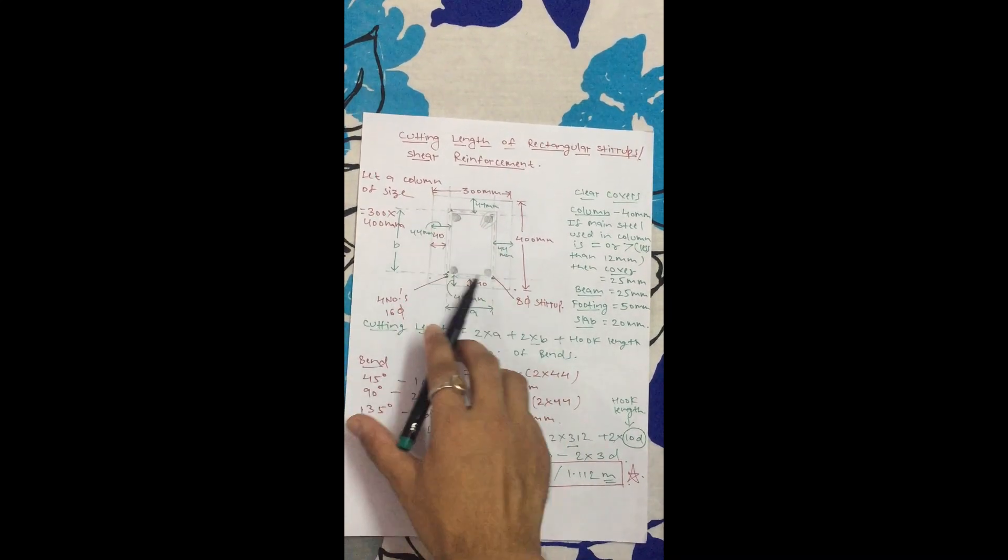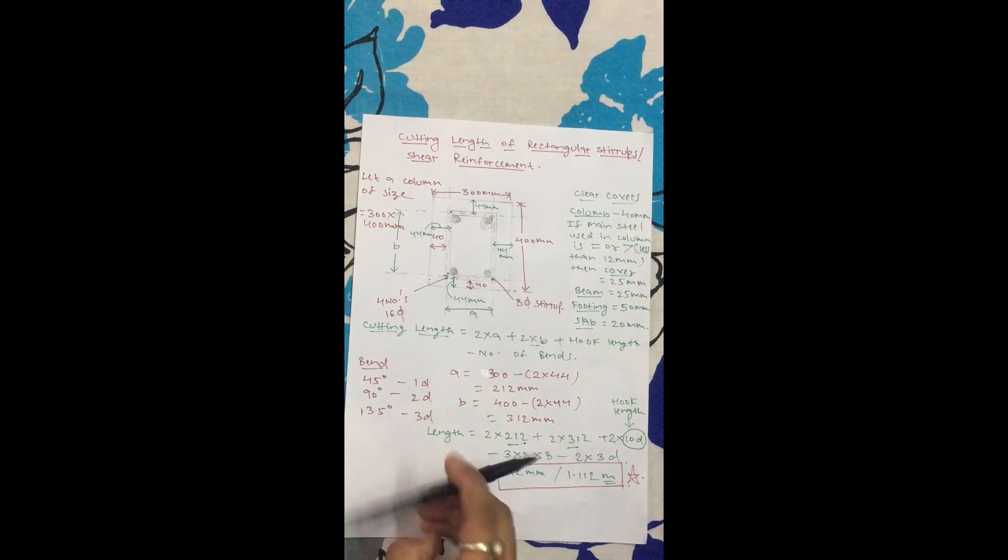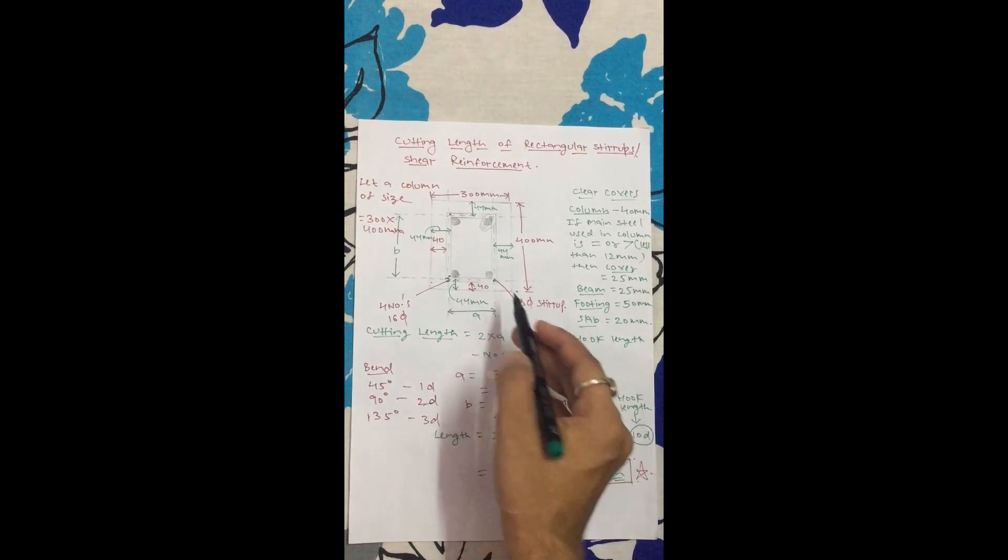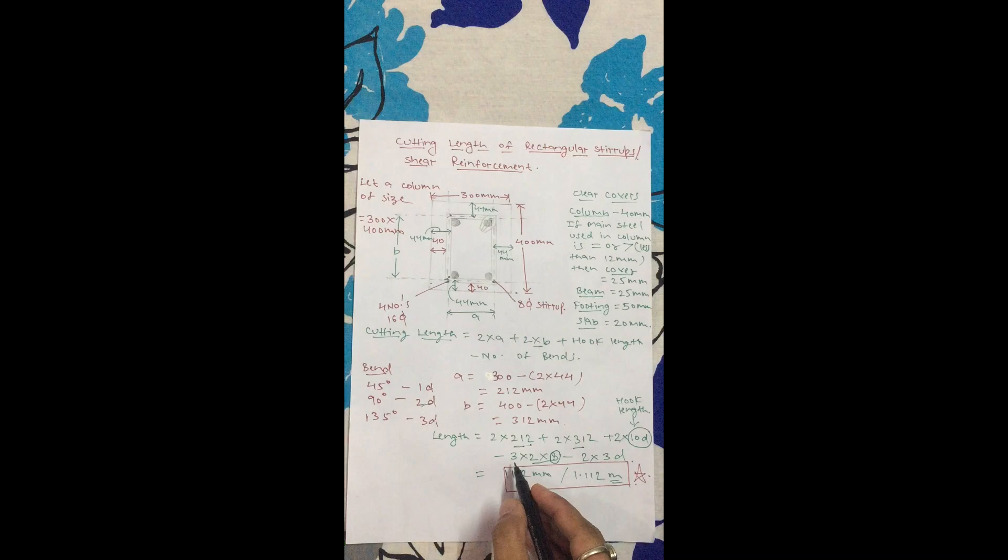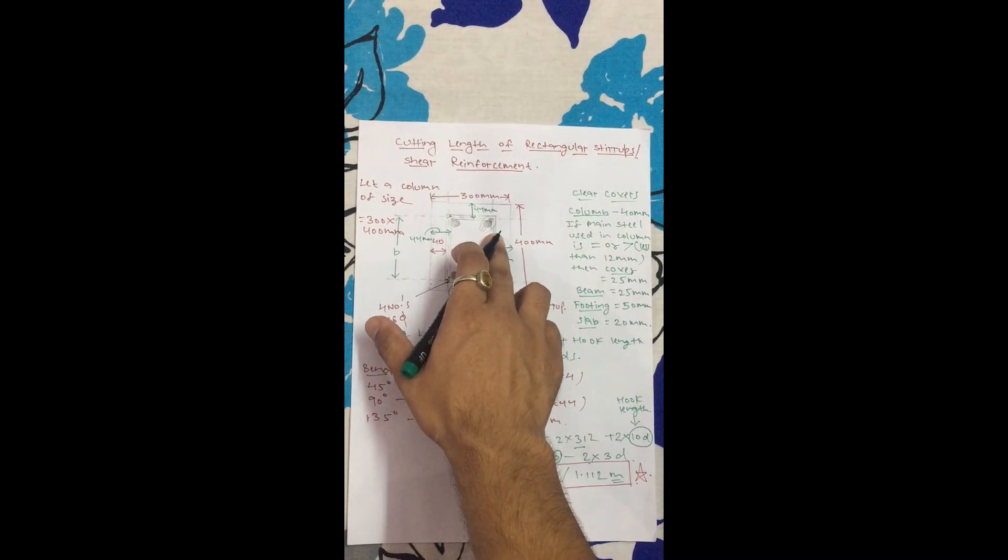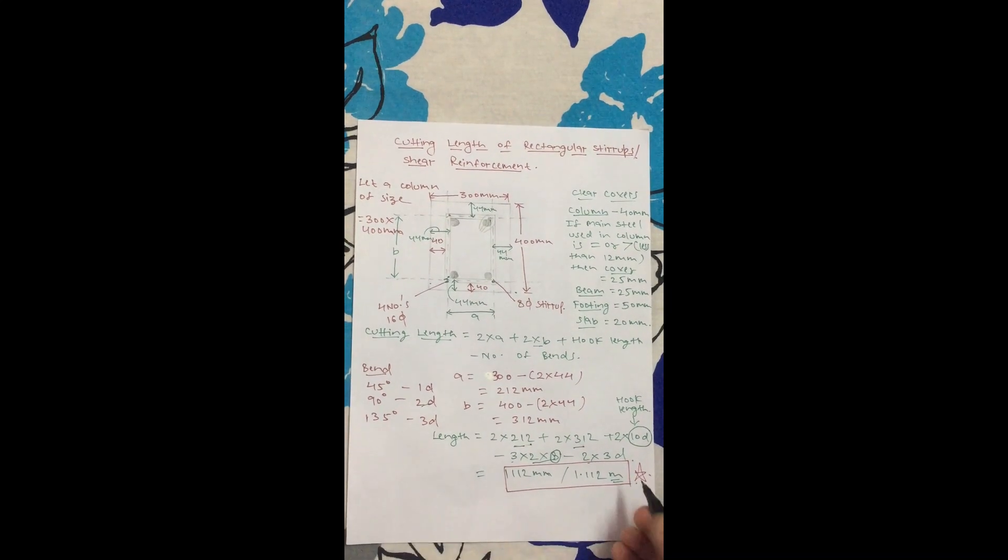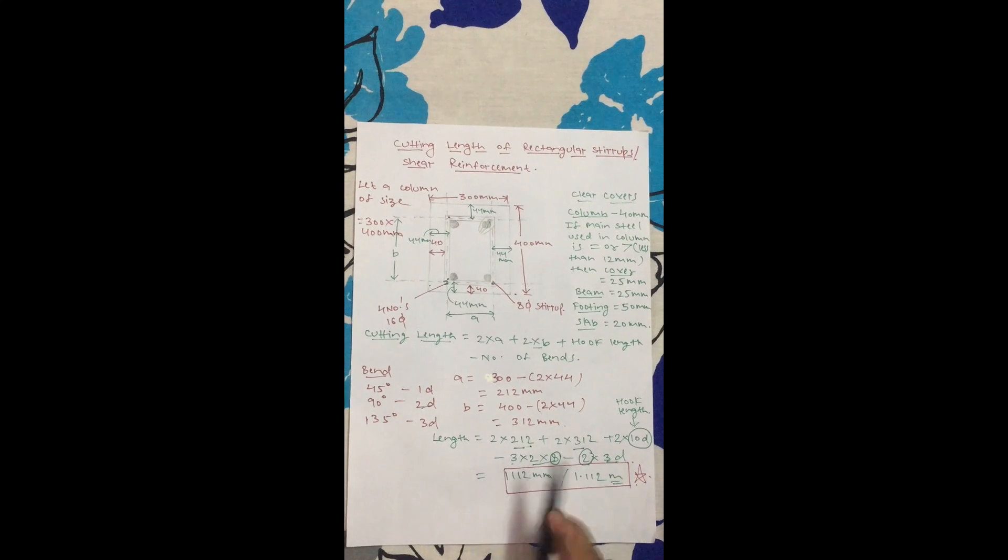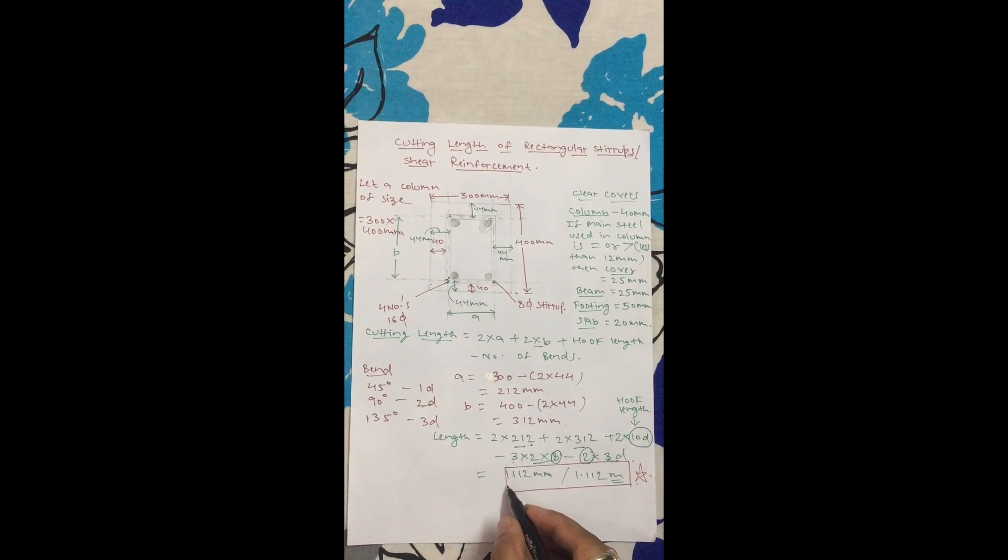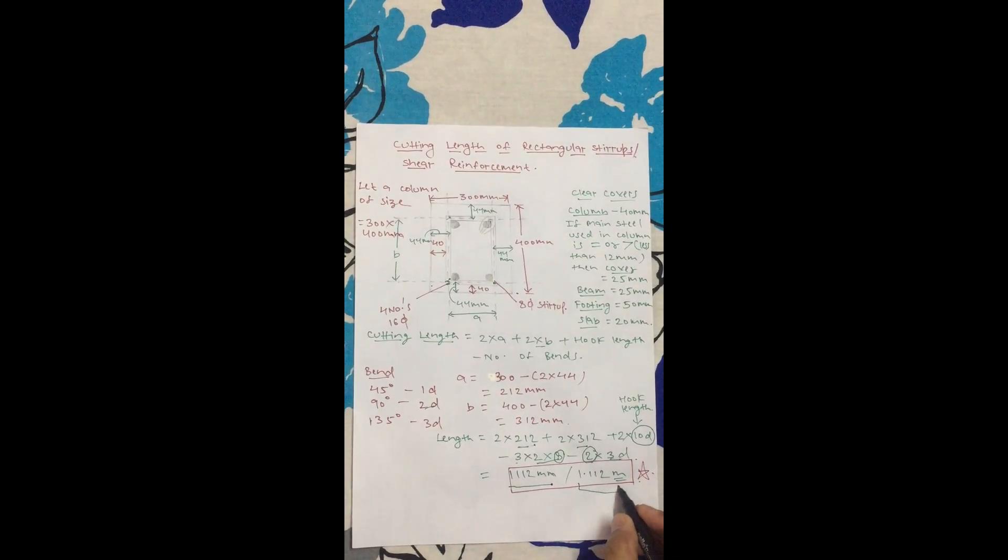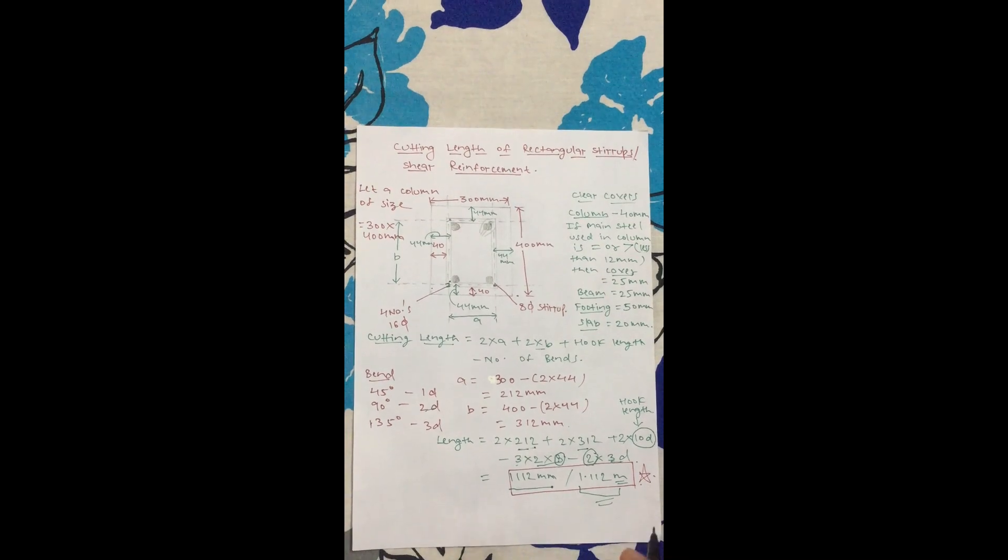So 2 into 212 plus 2 into 312, minus the bending length. We have 2 into 10D for the hooks, which is 2 into 10 into D. Then minus number of bends - three bends at 90 degrees, which is 2D, so 3 into 2D. Minus 2 bends at 135 degrees, which we use 3D, so 3D into 2 bends. If you put the values, the cutting length is 1112mm, or 1.112 meters. This is how you take out the cutting length.